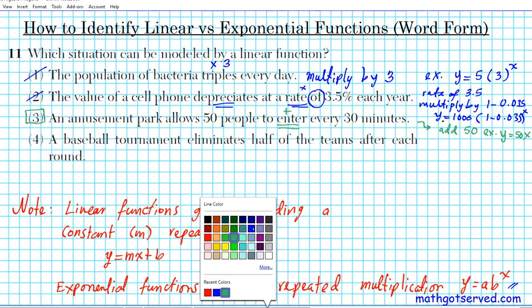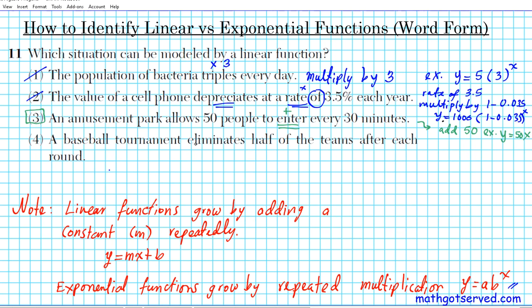For option four, it says a baseball tournament eliminates half of the teams after each round. So there goes that rate again and half. So half of what does that tell you? Multiplying by one half, as we saw in option two. So whenever you see that rate component in a particular factor, it will tell you that it's repeated multiplication. And this ladies and gentlemen is an exponential function. And that's not the answer that we desire.